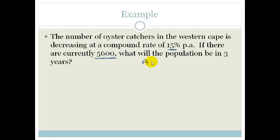So we've got A equals P times 1 minus I to the power of N, right? And we know that the principle is the amount of birds we start with which is 5,600. We know that I is the interest which is going to be 15. We've got to change it to decimal, so we divide by 100 which is 0.15 and the N is the number of years in this case which is 3.